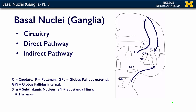In general, our motor cortex sends information not just through the internal capsule to your muscles, but to the striatum. For simplicity, I just have the arrow drawn to the putamen. Other components are the globus pallidus, the subthalamic nucleus, and the substantia nigra. In general, the substantia nigra is sending information back up to the striatum.